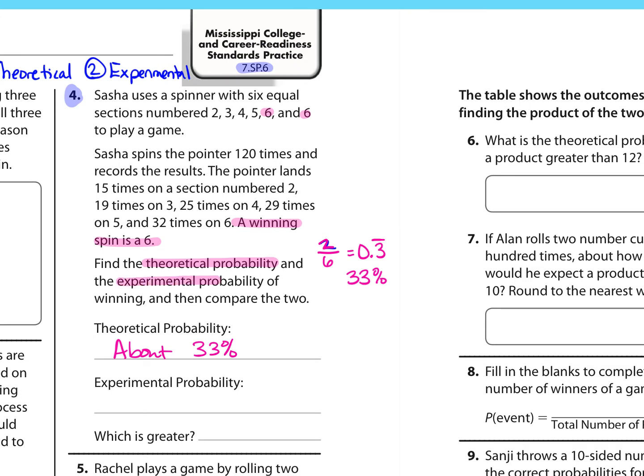Now we're going to find the experimental probability. So what actually happened there? Well, it landed on a 6 32 times out of 120 spins. So let's find that decimal. 32 divided by 120 is 0.26 repeating, which is about 27%. Which one was greater in this case? The theoretical probability, it was a higher number. It's not what actually happened, but it's what you would have expected.